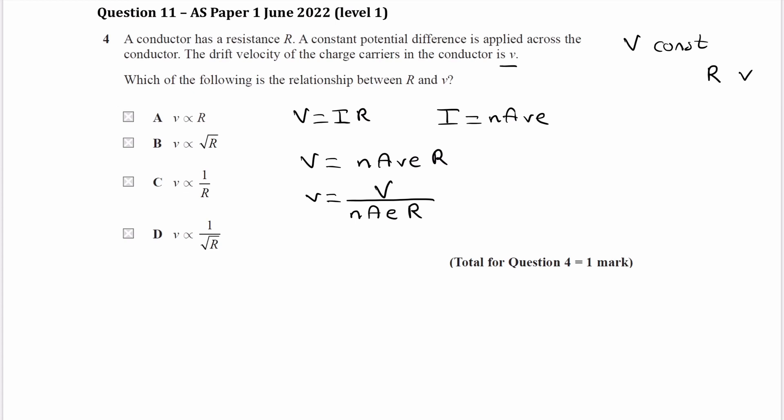A bunch of things are constant. So we know that V is constant. The charge carrier density will also be constant because the material is not changing, and the charge carrier density just depends on the material.